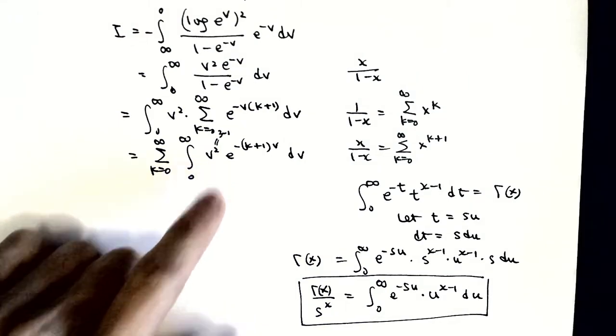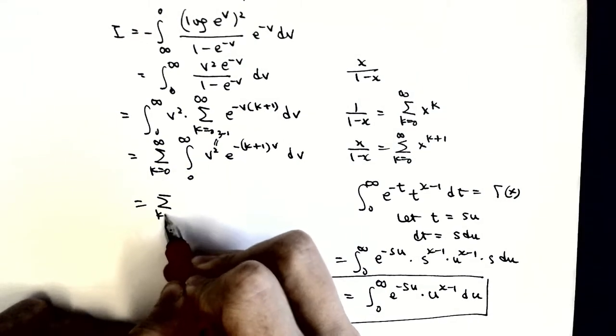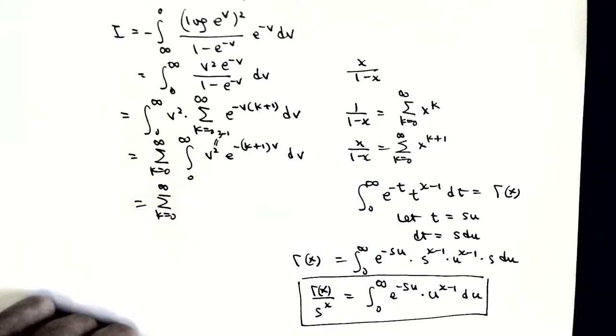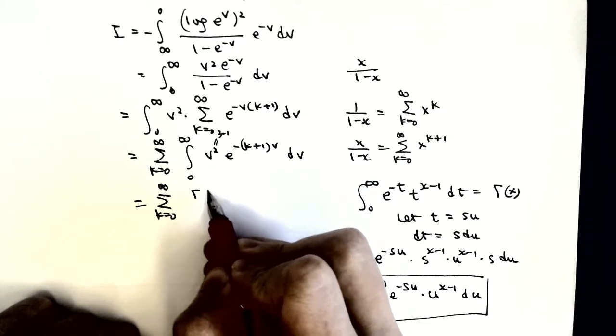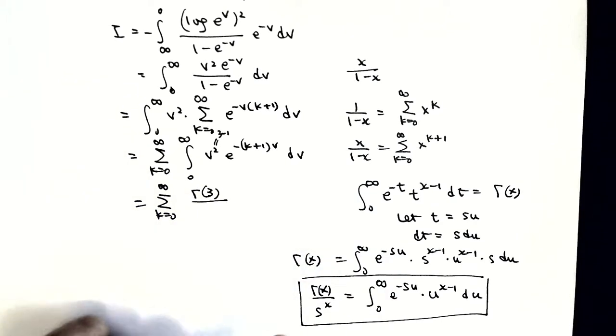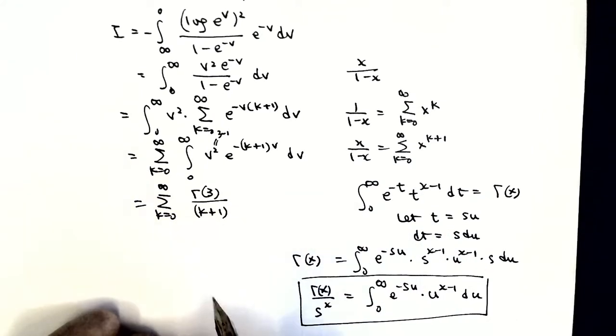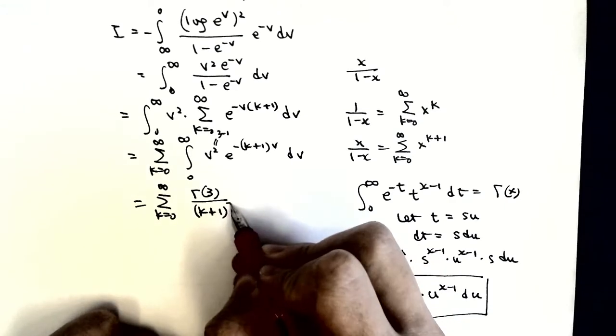First, we notice that v squared is just 3 minus 1. So we can safely replace this by gamma of 3 over, and the s is just k plus 1, so we will have k plus 1 to the power of 3.